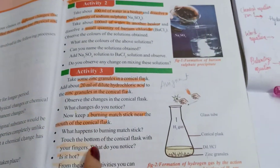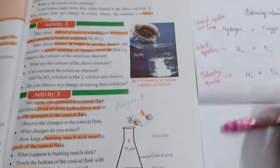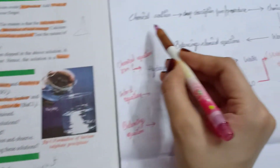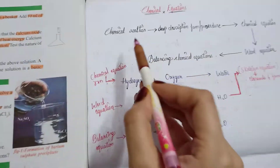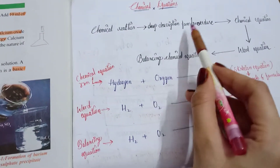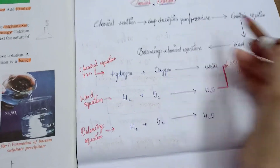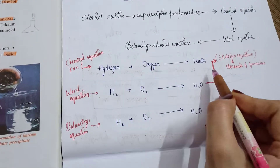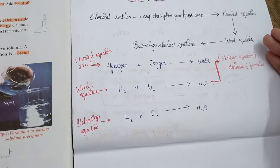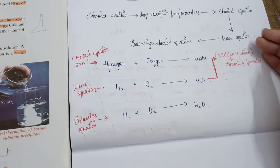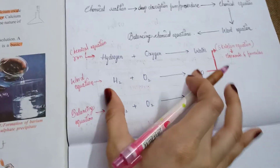That lengthy description form takes a very long time to write. So in order to avoid this, we tried to convert the description form into chemical equations. Then we converted the chemical equation into a simpler word form.